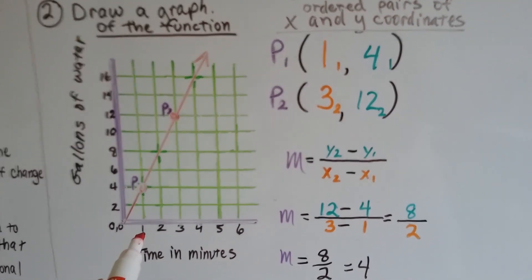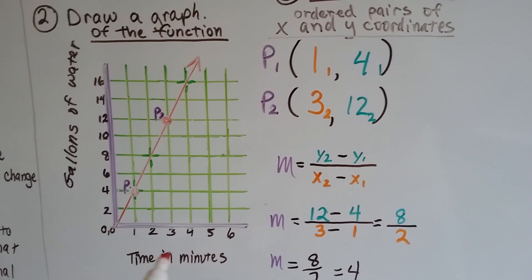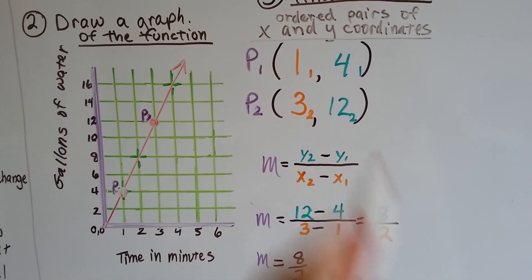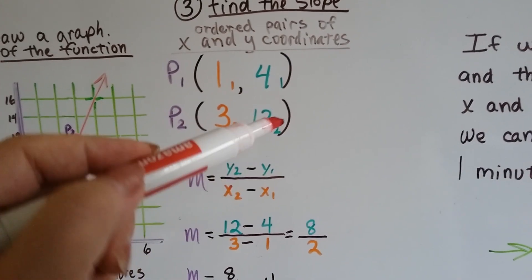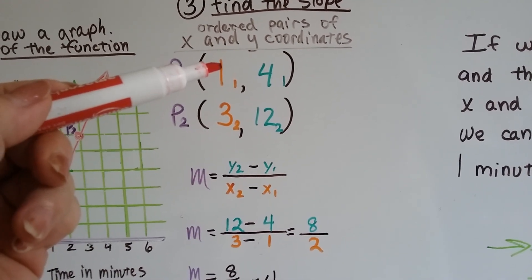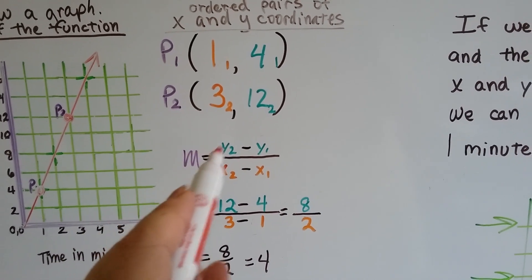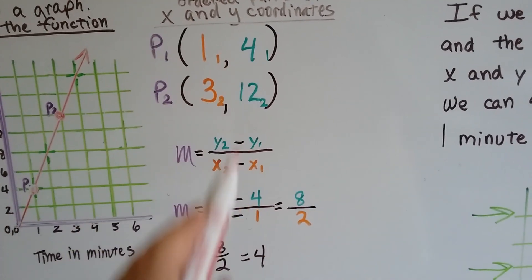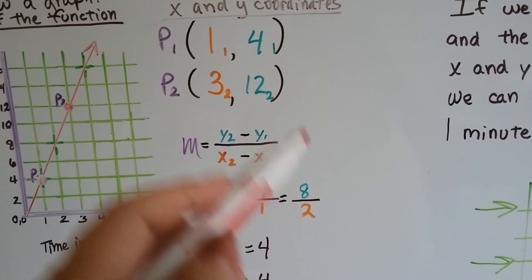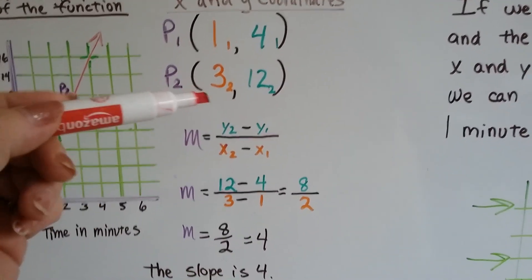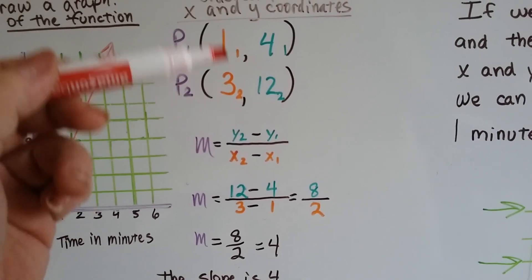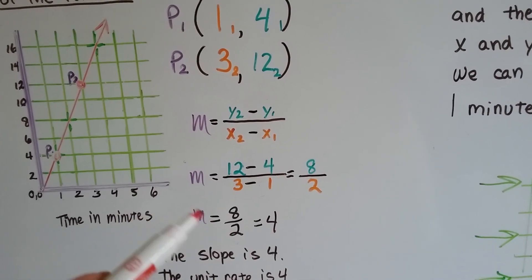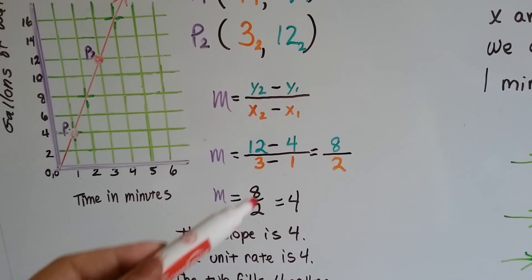So now I've got my ordered pairs of my x and y coordinates, and I can find the slope. For point one, I've got the ordered pairs of x1, y4, and for point two, I've got the ordered pairs of three and twelve for my x and y. Now all I have to do is subtract y1 from y2 and x1 from x2. Y2 is the point two's y. That's a twelve. And we're going to take away the four. That's point one's y. And twelve take away four is eight. Twelve take away four is eight. Now we have to do the x. So we have x2 minus x1. Well, here's x2 and here's x1. So we've got three minus one. Three minus one. So now we've got eight over two.